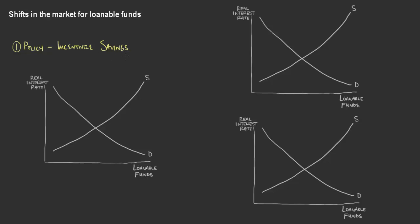They could give tax preference for savings accounts — maybe the interest you receive from savings accounts would be tax deductible, or you wouldn't have to pay taxes on that earned interest. You could think about something like a Roth IRA account, for example, where you can save your money. If this is going to incentivize savings, the supply of savings is the supply curve — these are individuals who are willing to lend money. If we're incentivizing them to lend even more because of tax preference, this would be a shift in the supply curve to the right. At any given real interest rate, we would see an increase in the amount individuals would be willing to supply on the market for private loanable funds.